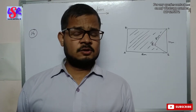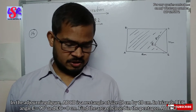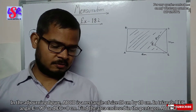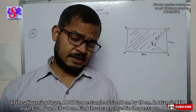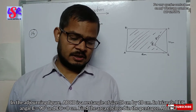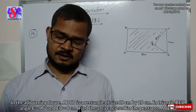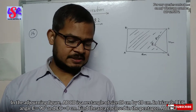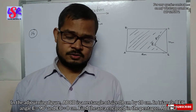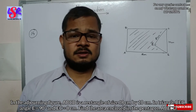Now let us see question number 14. Here ABCD is a rectangle of size 18 centimeters by 10 centimeters. In triangle BEC, angle C is 90 degrees and EC is 8 centimeters. Find the area enclosed by the pentagon ABECD.